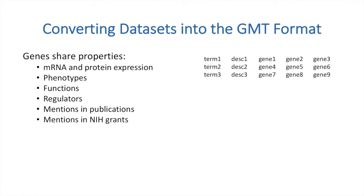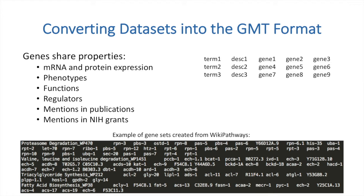The GeneMatrixTransposed file is a powerful data organization format for accessing the shared properties of gene sets. GMTs contain tab-separated lines where each line consists of a gene set name or term, a description, and then a list of genes. Each new line represents a gene set for that library. Here is an example GMT from Wikipathways for C. elegans.